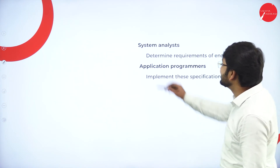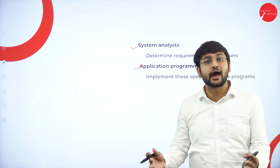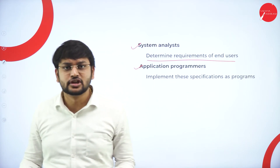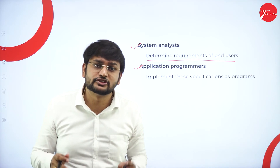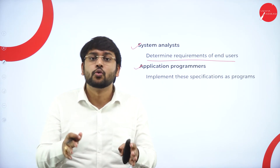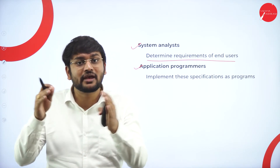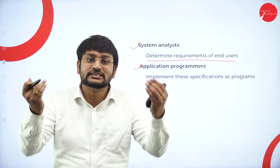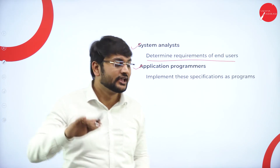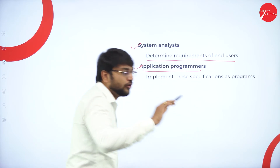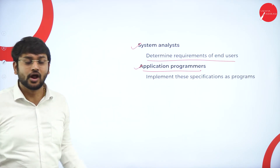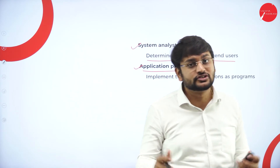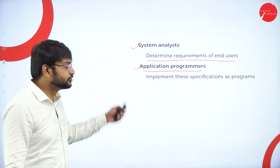The next users are system analysts and application programmers. System analysts determine the requirements of the end user. Here is the flow: first, the system analyst collects the requirements, then passes them to the database designer. The database designer designs the structure of the database, and then the application programmer implements that design. Always remember — the application programmer implements the design given by the designer.